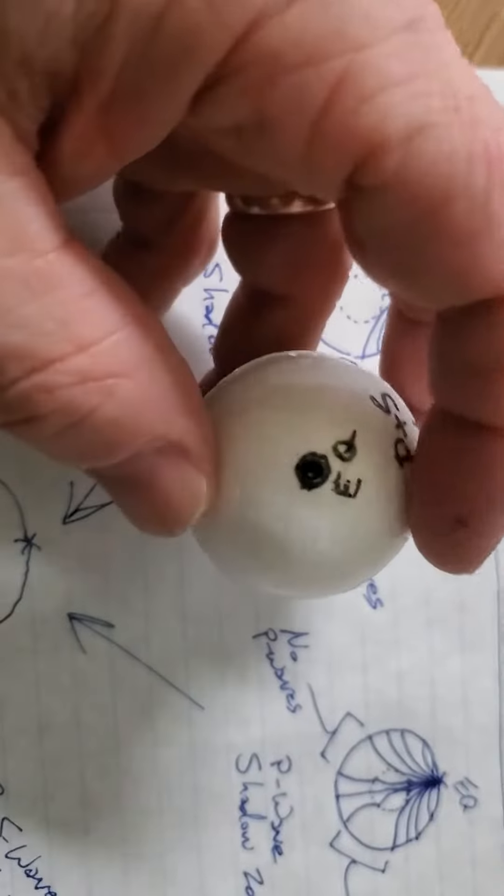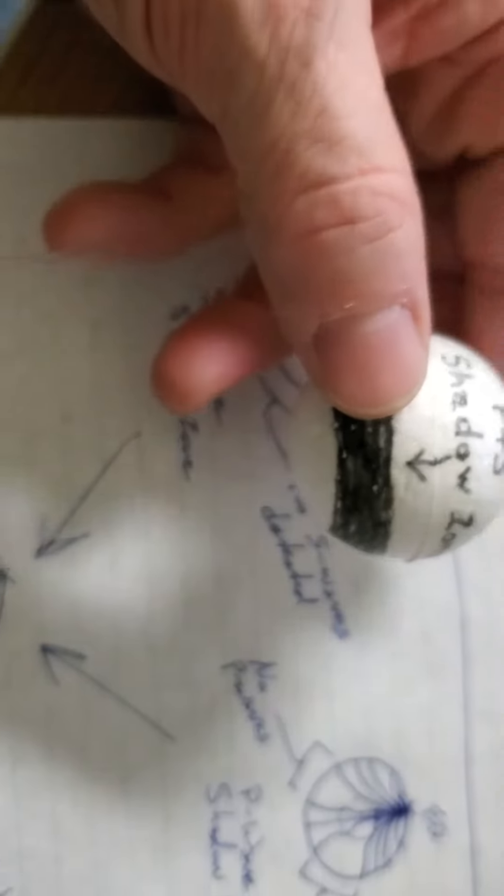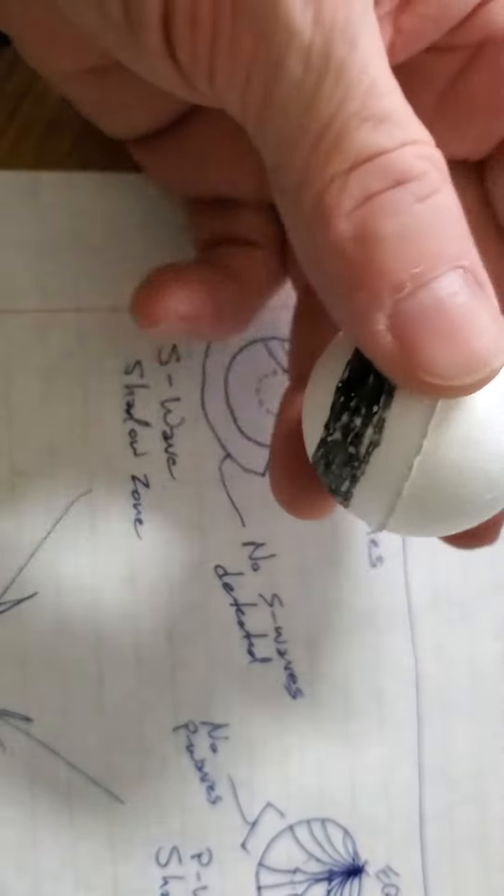Here's the 3D model. If the earthquake is here, the combined P and S shadow zone will be like this. Okay?